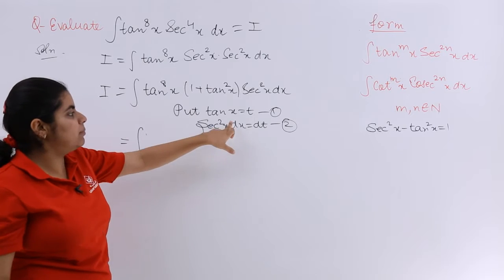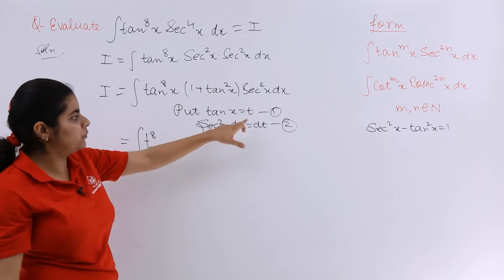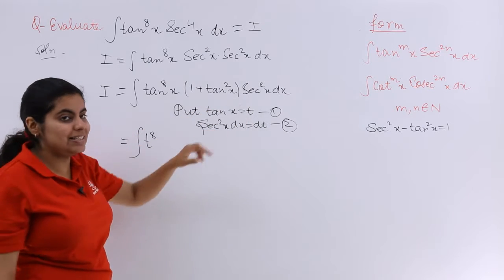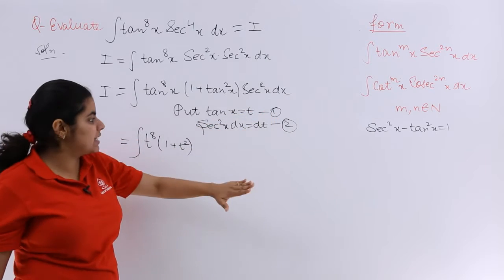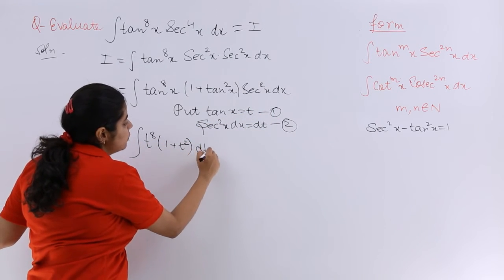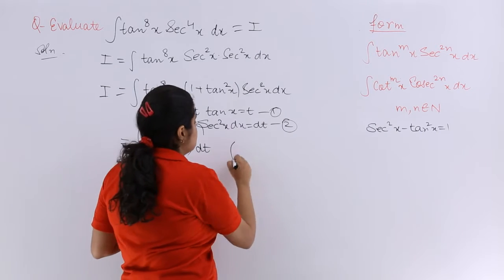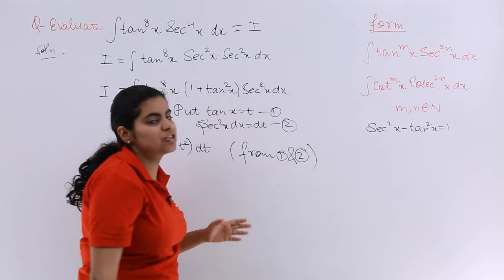Tan raised to the power 8 means t raised to the power 8. 1 plus tan square means again 1 plus t square, and secant square x dx is dt. So I have done all this from which equation? From both of these, which is from 1 and 2, and now you know how to do the question.